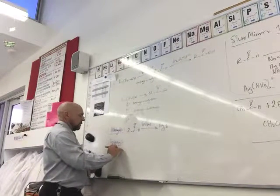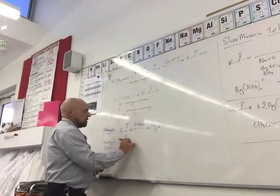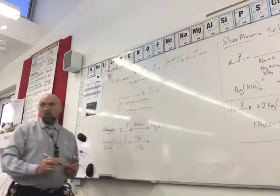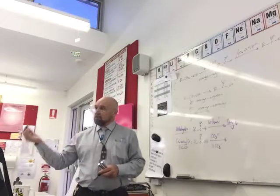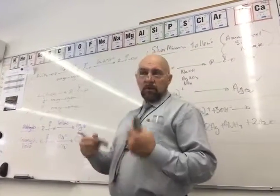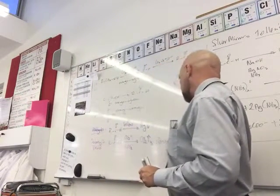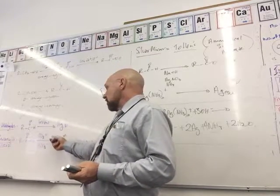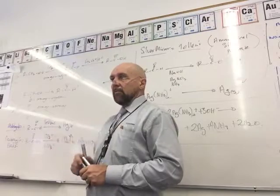There is a test for carboxylic acids: react the carboxylic acid with a carbonate or hydrogen carbonate. Acid plus carbonate gives salt plus water plus CO2. So when testing for a carboxylic acid, we expect effervescence — bubbles forming straight away — when we add a soluble carbonate or hydrogen carbonate to the sample. We won't get that with anything else.